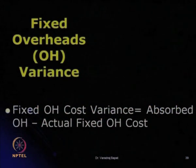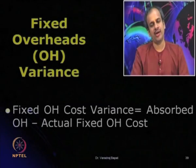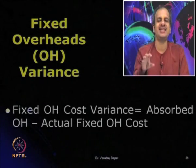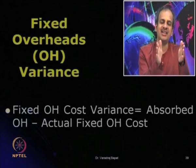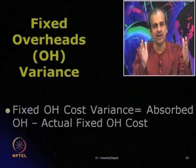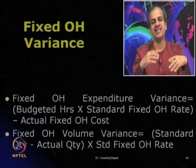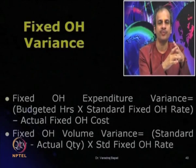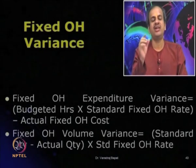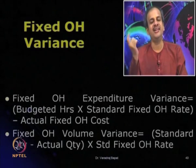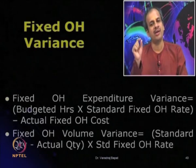Let us look at the formulas. Fixed overhead cost variance is absorbed overhead minus actual overhead. Absorbed overhead means we take the budgeted rate per unit and charge actual units at that rate — that is compared with actual cost incurred, giving us the total fixed cost variance. This can be broken into expenditure and volume. For expenditure variance, we look at budgeted hours into standard rate. For volume variance, we find the difference between standard quantity and actual quantity, multiplied by the standard overhead rate.